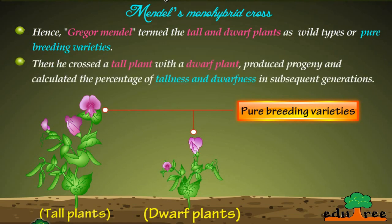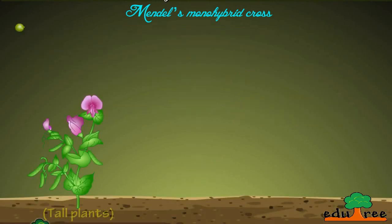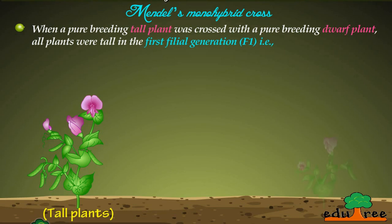Then he crossed a tall plant with a dwarf plant and calculated the percentage of tallness and dwarfness in subsequent generations. When a pure breeding tall plant was crossed with a pure breeding dwarf plant, all plants were tall in the first filial generation, denoted as F1.